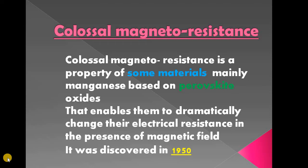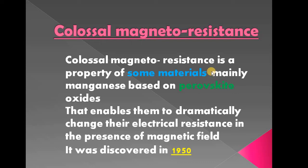Colossal magnetoresistance is a property of some materials, mainly manganese-based perovskite oxides. That is, compounds which contain manganese as an element — only those compounds will show the property of colossal magnetoresistance. Other than that, research is still ongoing, enabling them to dramatically change their electrical resistance in the presence of a magnetic field.